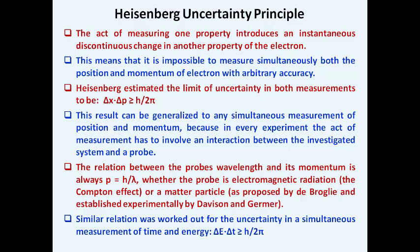This relation is generalized to simultaneous measurement of position and momentum. The relation between wavelength and momentum is P equals h over lambda, whether you are considering an electromagnetic wave using the Compton effect or a matter particle using the de Broglie hypothesis established by Davisson and Germer's experiment. A similar relation also holds for energy and time.